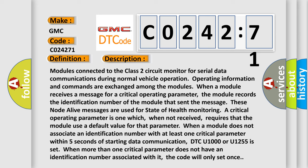These node alive messages are used for state of health monitoring. A critical operating parameter is one which, when not received, requires that the module use a default value for that parameter. When a module does not associate an identification number with at least one critical parameter within five seconds of starting data communication,